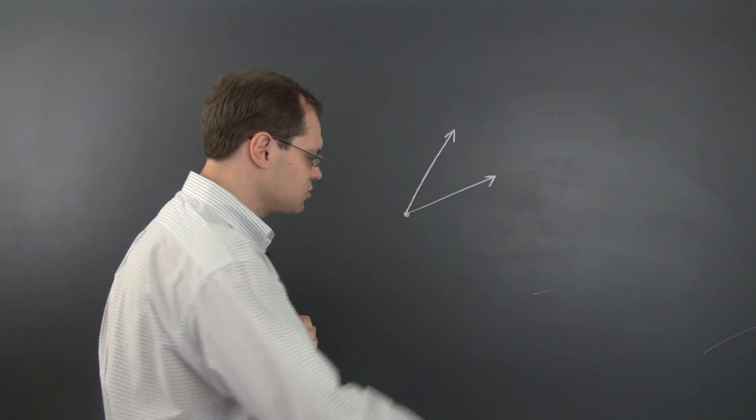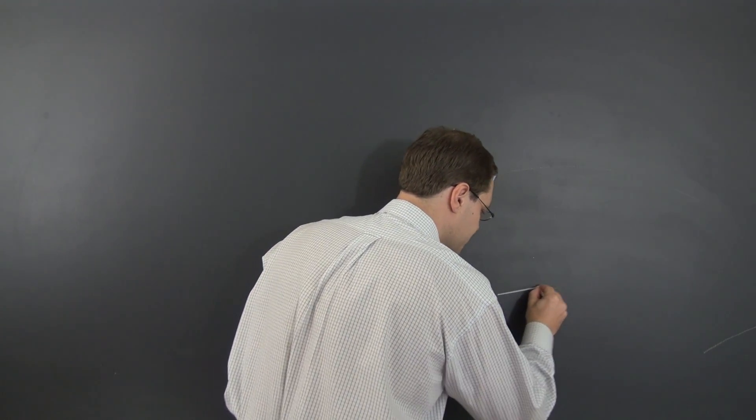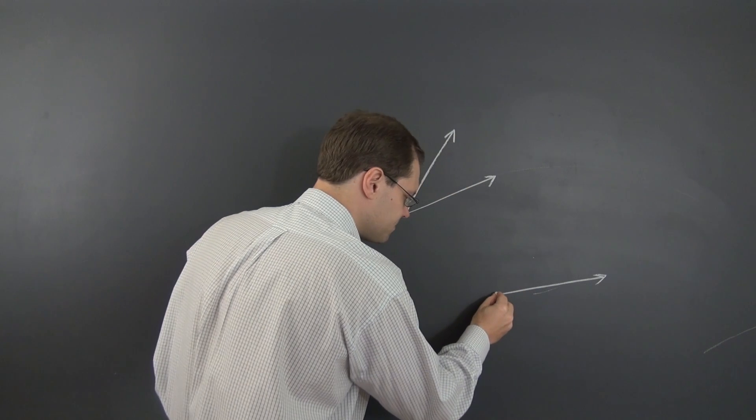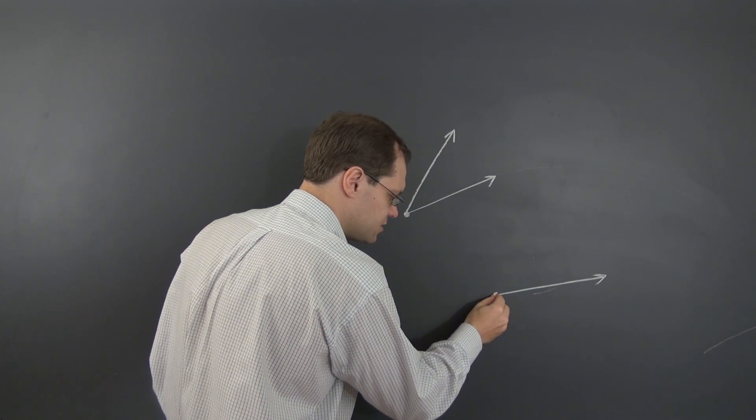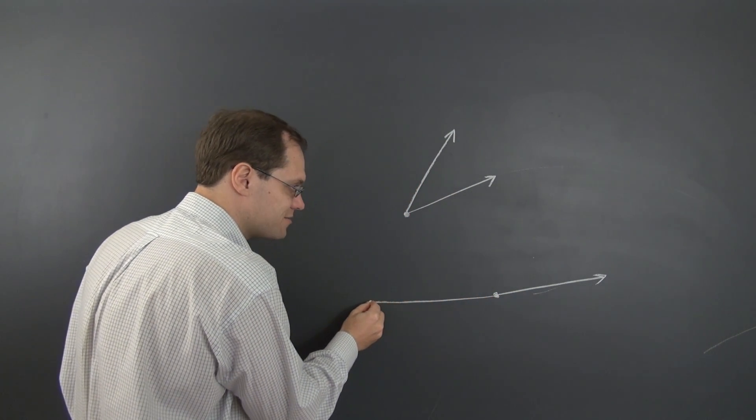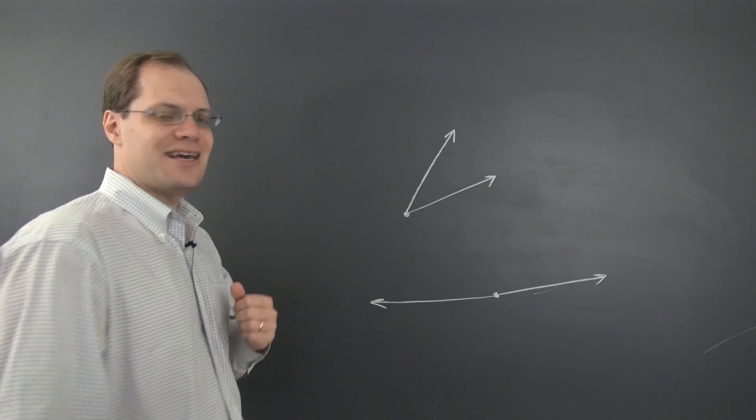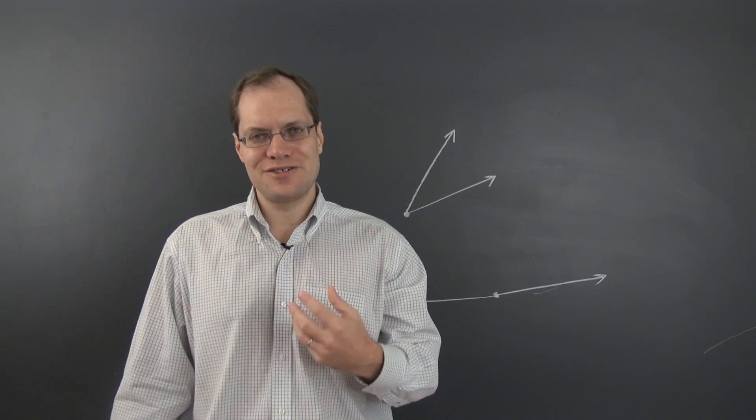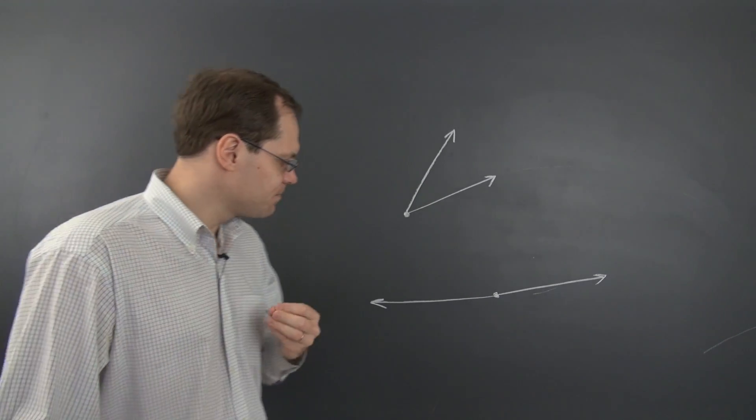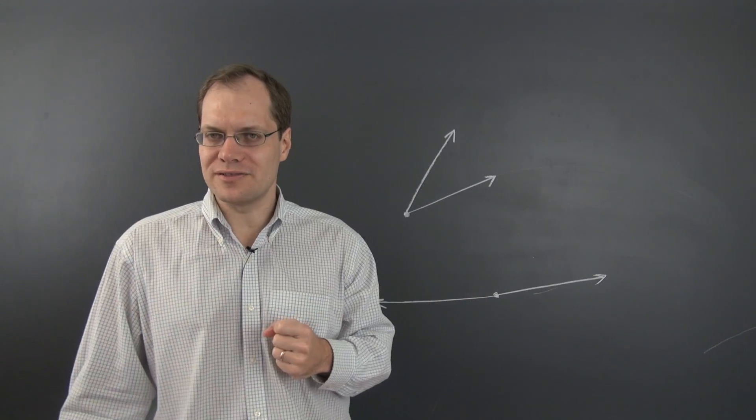Consider this situation when the two vectors almost, but not quite, cancel each other. In this case, it's actually very hard to tell on an intuitive level or accurately which way their sum points.